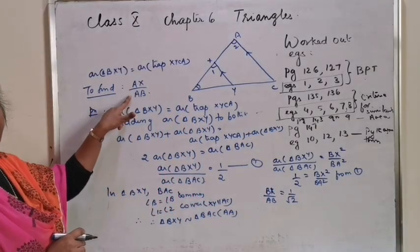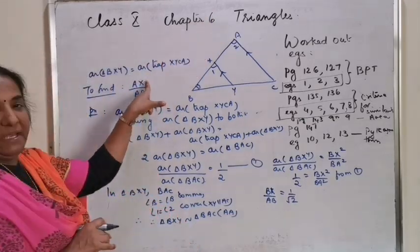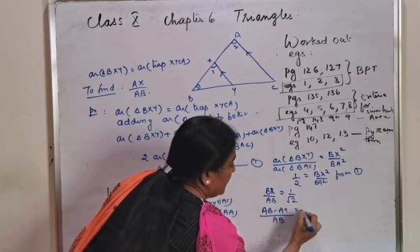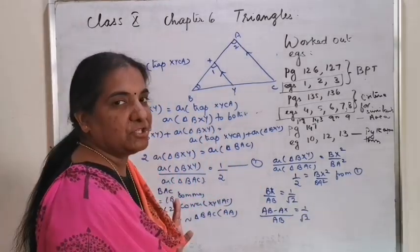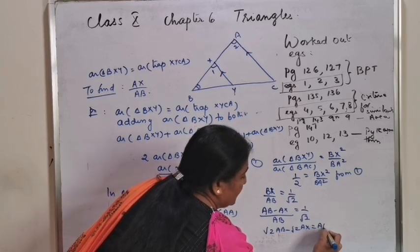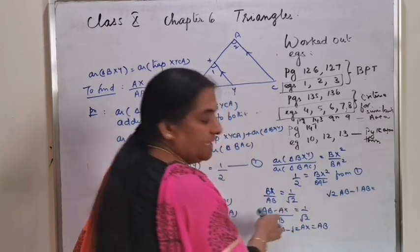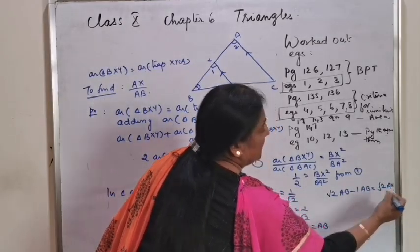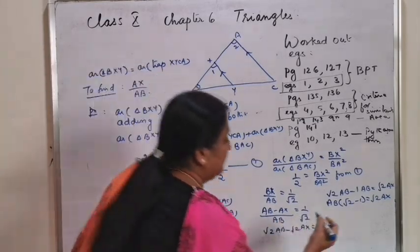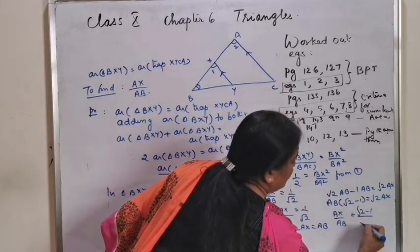The question asks for AX by AB. Replace BX as AB minus AX. So (AB minus AX) by AB equals 1 by √2. Cross multiply and rearrange: √2·AB minus √2·AX equals AB, so √2·AX equals (√2 minus 1)·AB, therefore AX by AB equals (√2 minus 1) by √2. This can be asked as a 3-mark or 4-mark question.